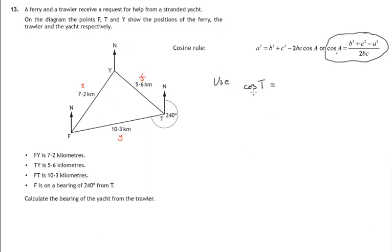So the version that we're using: cos T equals, now have a look at the form of this A, B, C. There's angle A, sides B and C, that's the other two sides. So cos T, F and Y, F squared plus Y squared minus A is opposite angle A, T is opposite angle T.